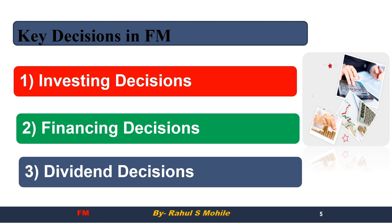Under dividend decisions, we clearly study what percentage is going to be distributed among shareholders as dividend. There are many concepts here, including Walter's model, Gordon's model, and the MM approach — the Modigliani-Miller approach — which show what impact paying a certain percentage of dividend has on the company. So the three key decisions in financial management are: number one, investing decisions; number two, financing decisions; and number three, dividend decisions.